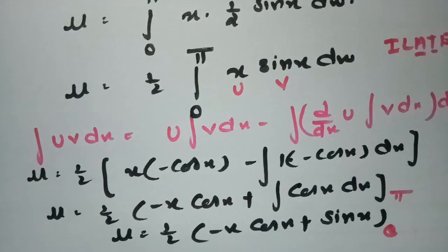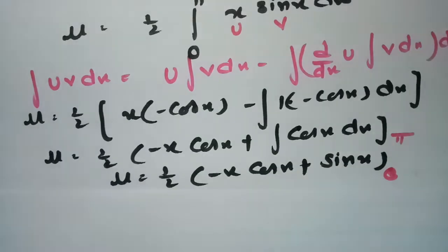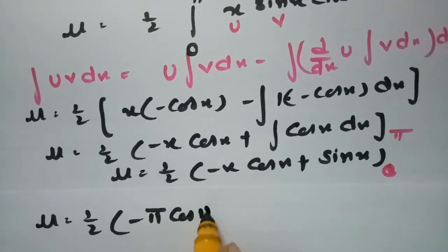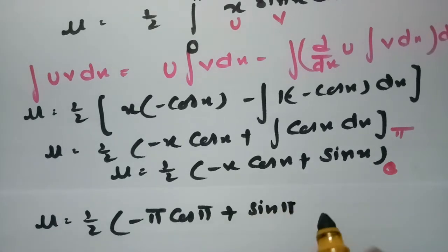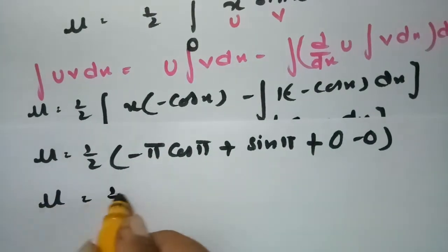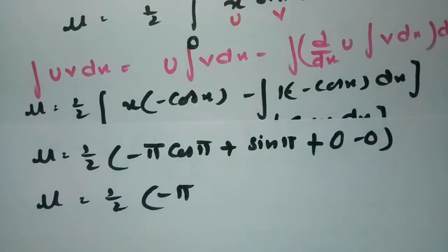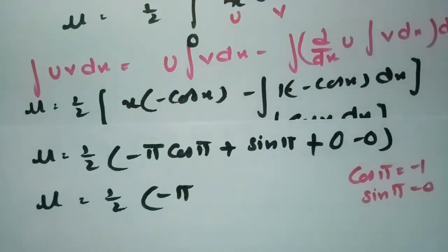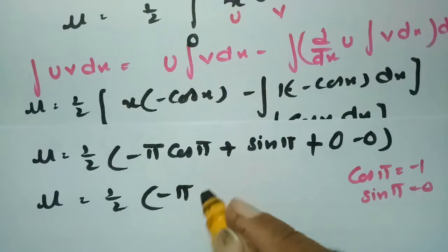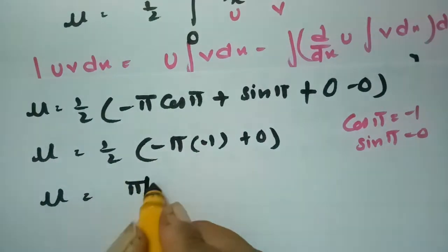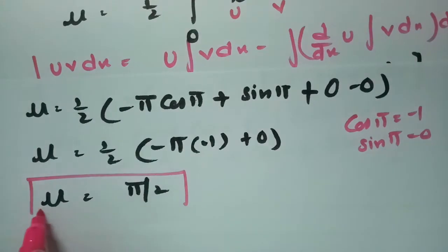Substituting the limits: at x = π, we get −π·cos(π) + sin(π) = −π·(−1) + 0 = π. At x = 0, we get 0 + 0 = 0. So μ = (1/2)·π = π/2. The mean value is π/2.